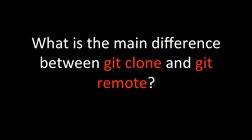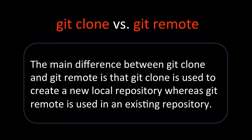The main difference between git clone and git remote is that git clone is used to create a new local repository, whereas git remote is used in an existing repository. Whenever we want to work on an existing project and you already have a remote repository, you just do git clone and it will create a local repository.